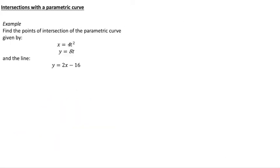Okay, something we might want to be able to do is to see how a line and a parametric curve intersect. So here's an example. Find the points of intersection of the parametric curve given by x = 4t² and y = 8t and the line y = 2x - 16.